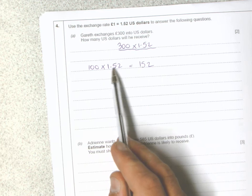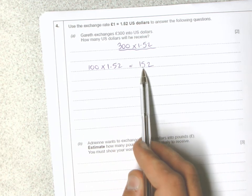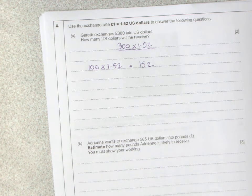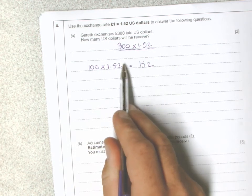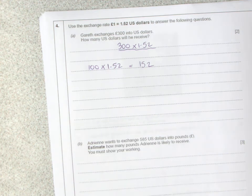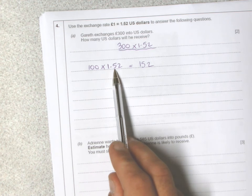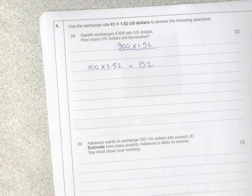The one goes into the hundreds column, the five into the tens column, and the two into the units column. Some people like to think of it as the decimal point moving two places to the right because there's two zeros, or each digit moves up two places on the place value chart.